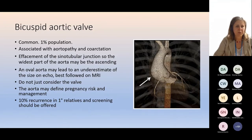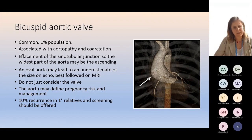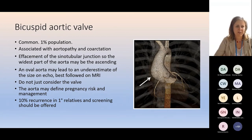Regarding the bicuspid aortic valve — it's very common and associated with aortopathy. Because of the effacement of the sinotubular junction, the whole shape of the ascending aorta is different, so the widest point may be the ascending aorta and not the sinus of Valsalva. When assessing a woman with a bicuspid aortic valve, you must assess the widest point of the aorta because it is that widest point which defines risk, and that risk may define the pregnancy risk — nothing to do with the valve itself. There is a 10% recurrence rate, so screening should be offered.